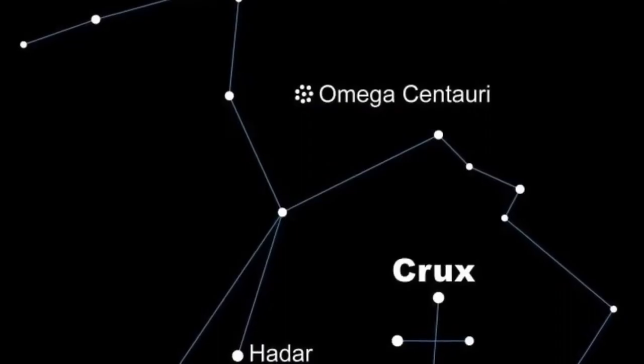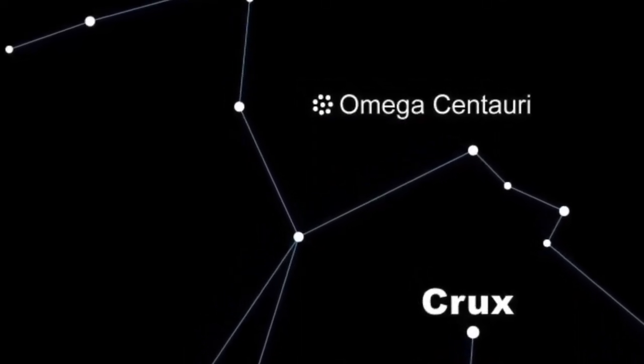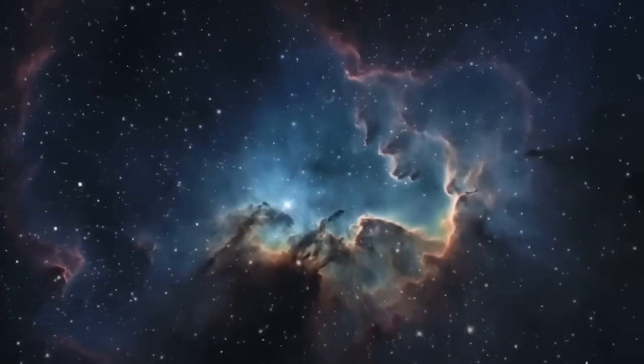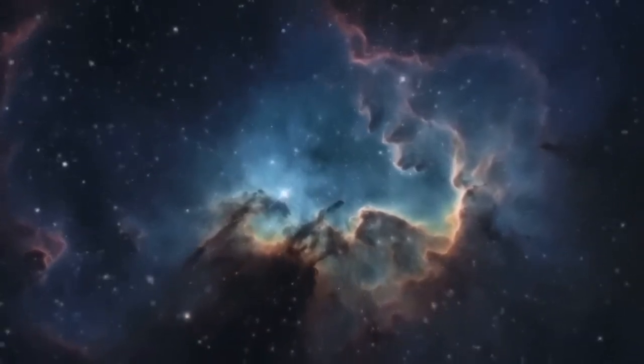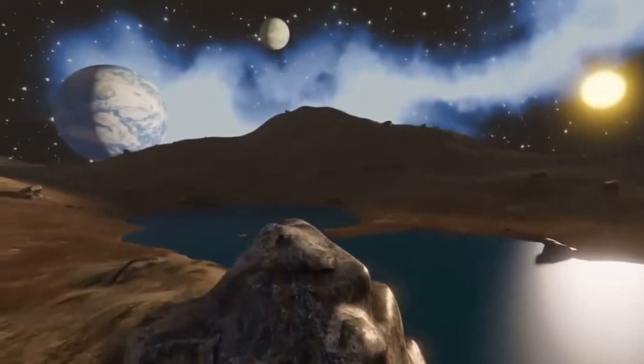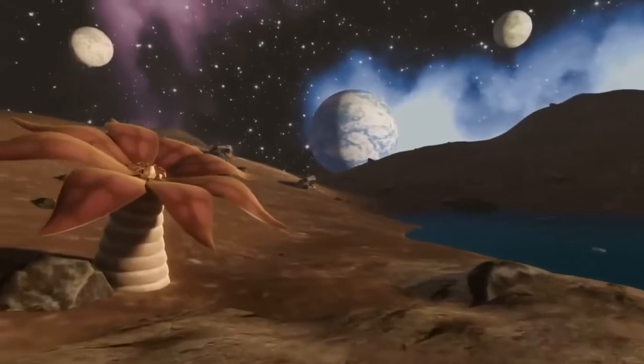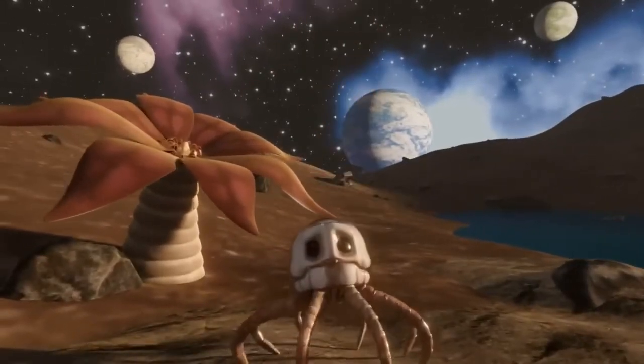Spotting exoplanets is no easy task, considering they play hide and seek behind the brilliance of their host stars. However, advancements in technology allow astronomers to capture elusive exoplanets in action, a cosmic paparazzi moment. Detection methods include observing gravitational wobbles induced by exoplanets and utilizing the transit method, where a planet dims its star's brightness as it passes in front.